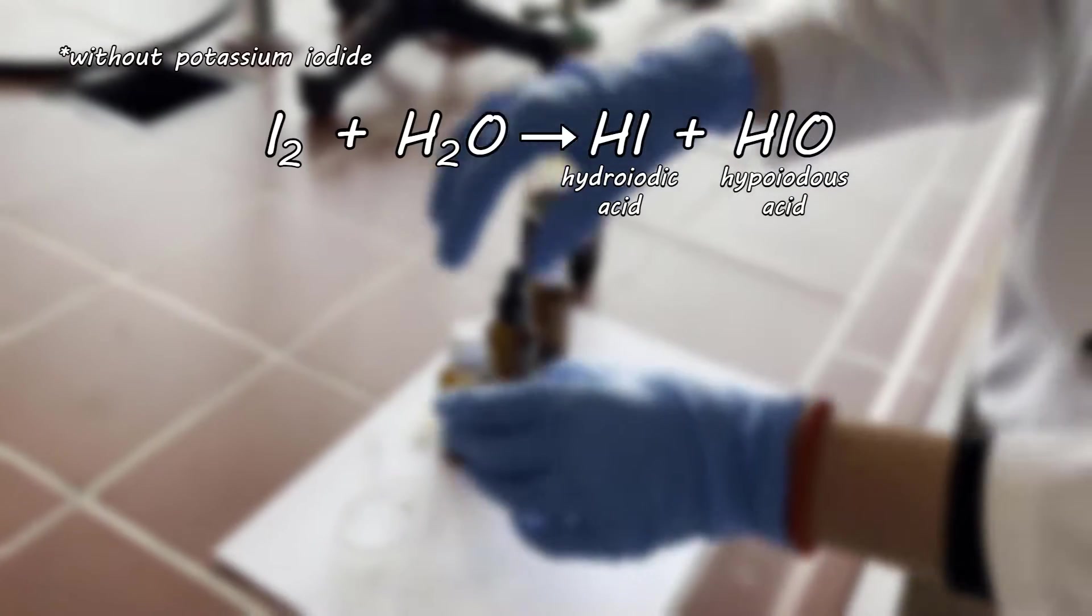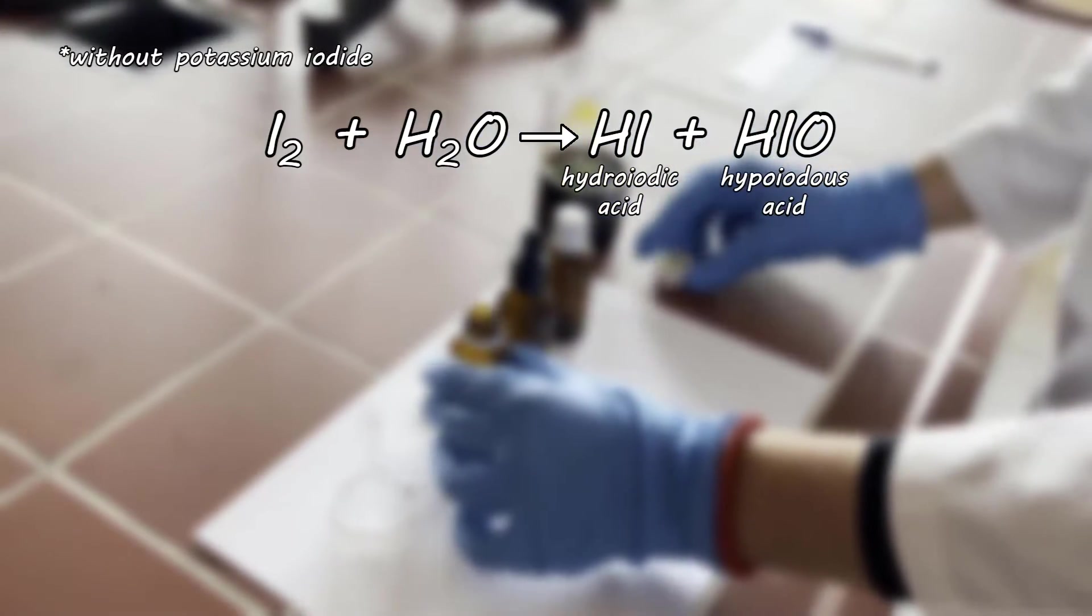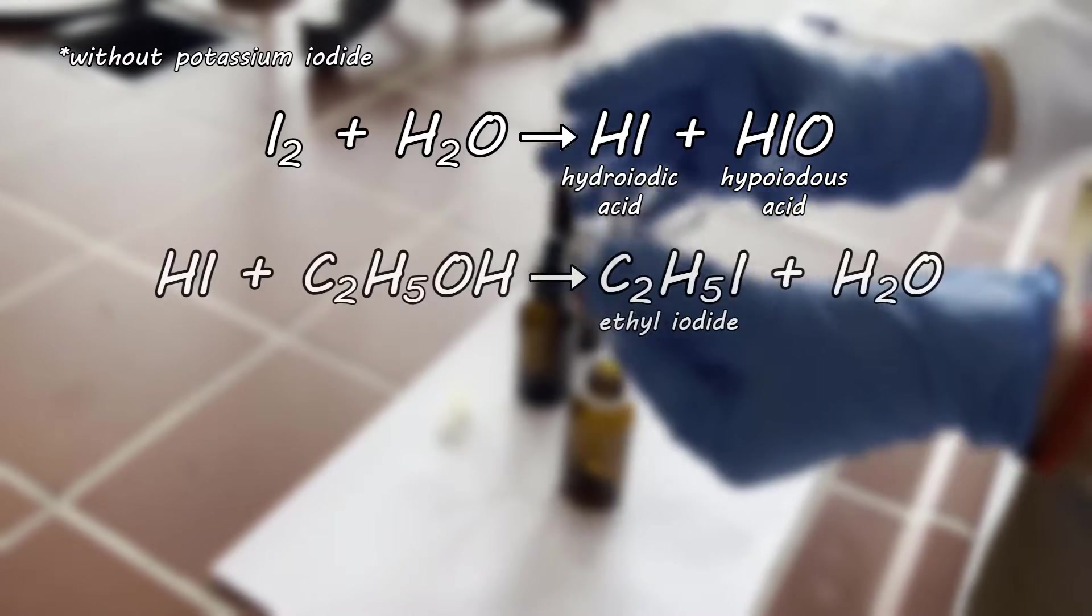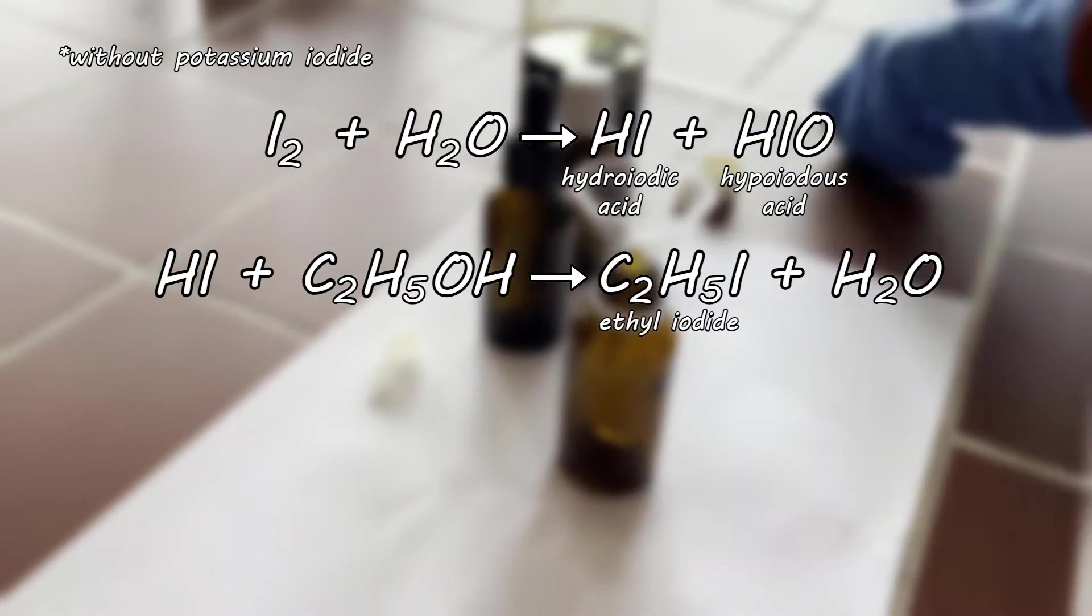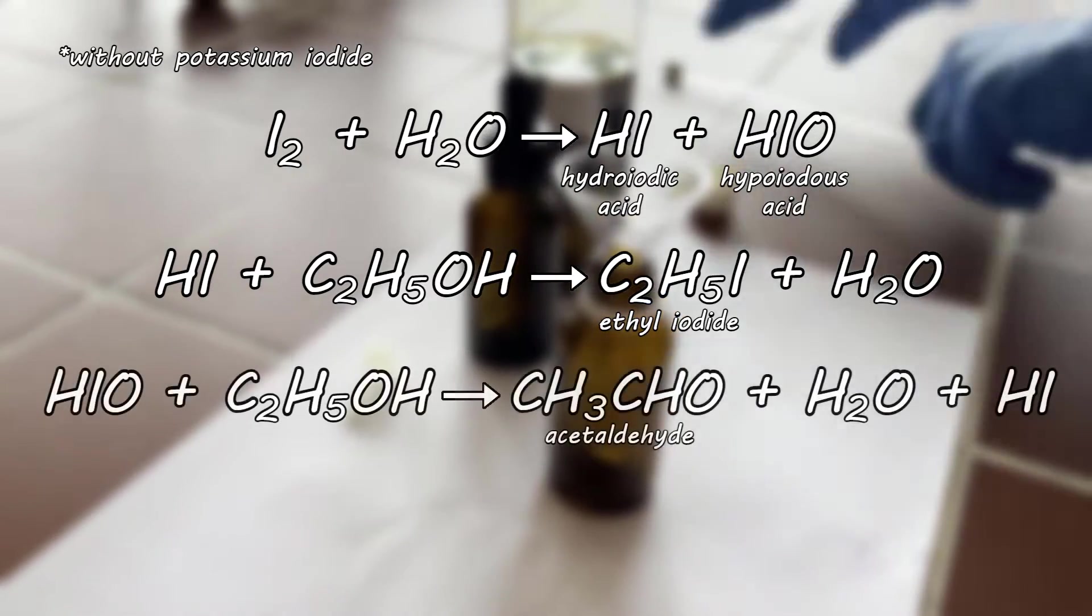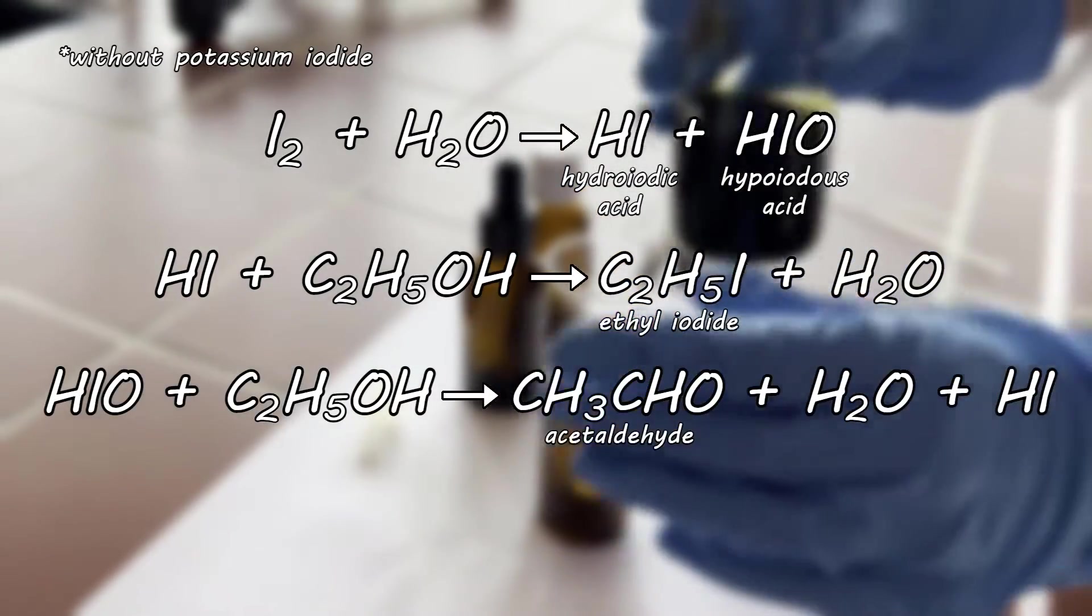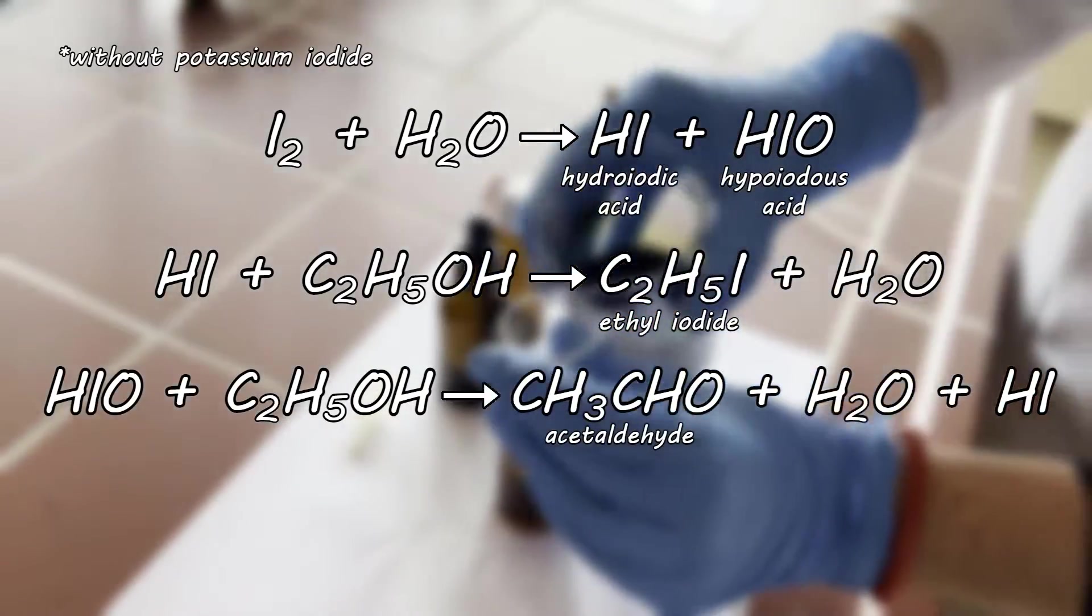The iodine reacts with the water from ethanol to form hydroiodic and hypoiodous acid. The hydroiodic acid continues to react with ethanol and forms ethyl iodide. While hypoiodous acid partially converts ethanol by oxidation to acetaldehyde.